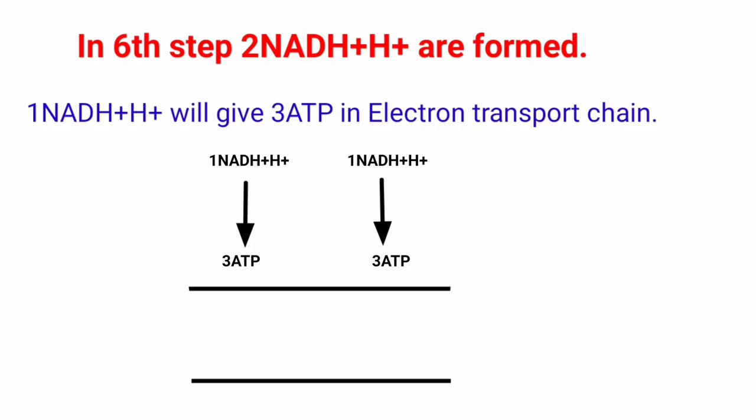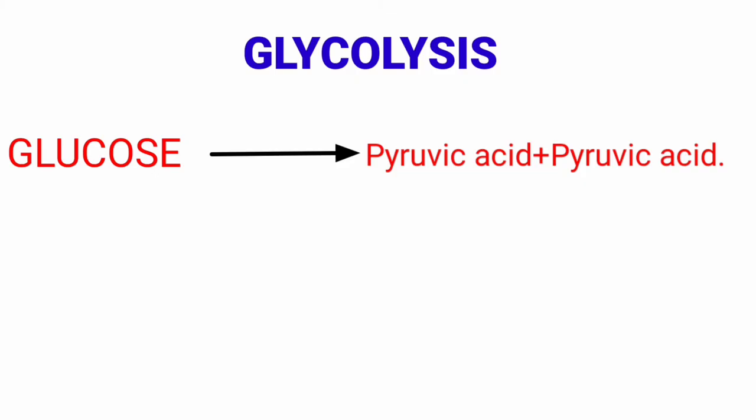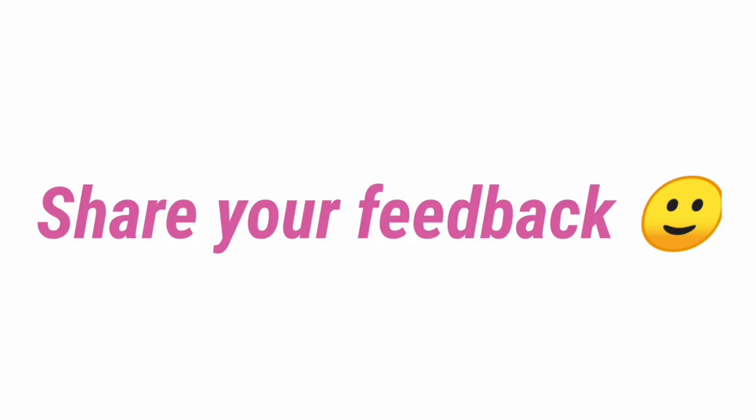Each NADH + H+ yields 3 ATP in the electron transport chain, so 2 NADH + H+ yield 6 ATP. Overall, in the process of glycolysis, one glucose molecule is broken down into 2 molecules of pyruvic acid, with a net gain of 2 ATP and 2 NADH + H+. That's all about the process of glycolysis — hope you understood. Share your feedback in the comment section so I can prepare more helpful videos.